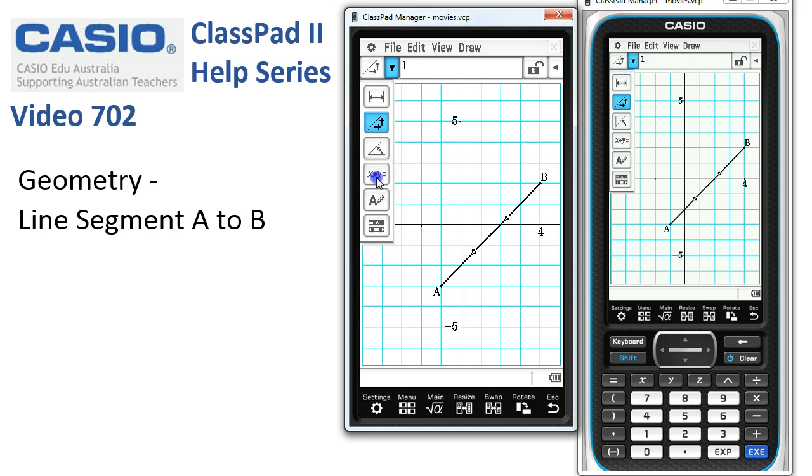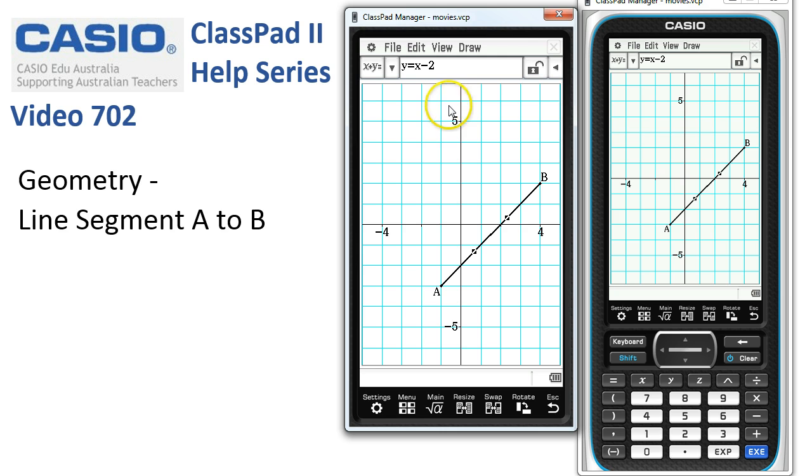And the last thing is the equation of the line as well. Y is equal to x take two. So how to find just about everything out about a line segment.